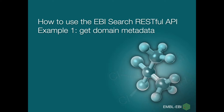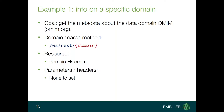The first example is how to get metadata information from a domain. Suppose you know there is a data domain — a database called OMIM — indexed in EBI Search. OMIM is a database about human diseases and genetic disorders. Suppose we want to get all the metadata available for that domain in the EBI Search system.